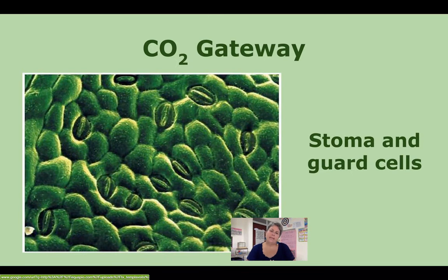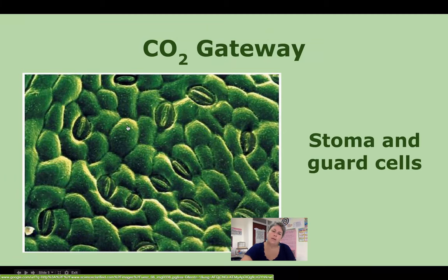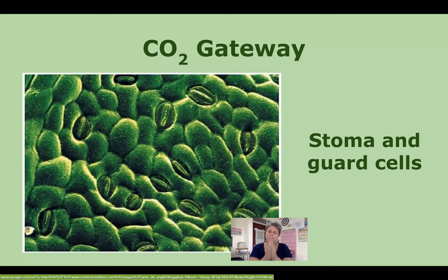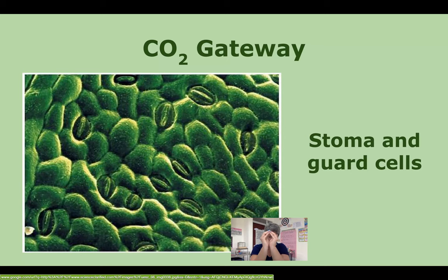Carbon dioxide gets in through stomata — stoma is just a science term that means opening or hole. In this image, you can see little bean-shaped sections; those are guard cells. There's a guard cell on each side, and they're specialized cells. When they're closed, there's no opening. But they can also pull apart, creating an opening called a stoma. It's through those stomata that carbon dioxide is able to get into the plant from the surrounding atmosphere.